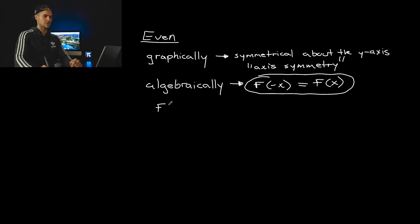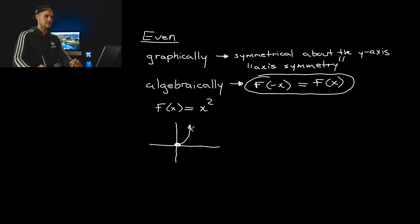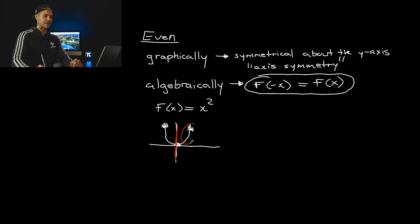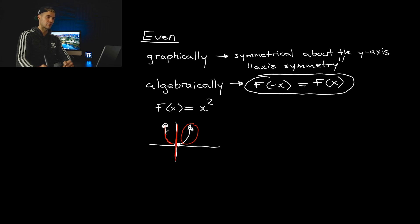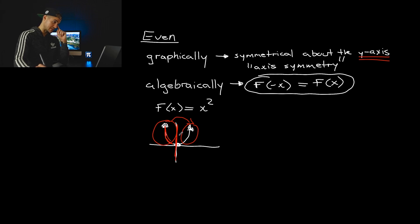A simple example of an even function is the parent function x squared, f of x equals x squared. If we graph this, x squared is just a parabola with a vertex at the origin. Notice just by looking at the graph we can tell it's symmetrical about the y-axis — if we take the right half and reflect it over the y-axis we end up with the left half, and vice versa. So just graphically we can tell that it's an even function.